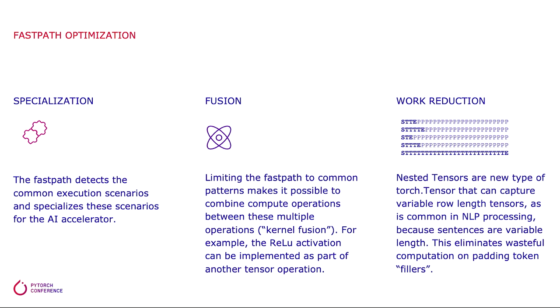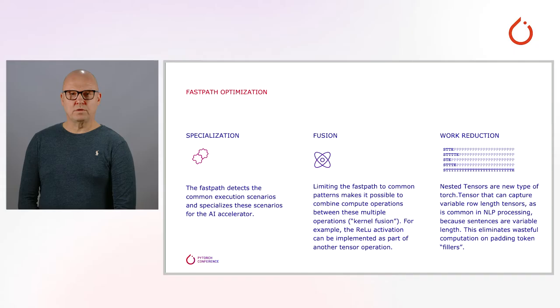The first optimization we perform for the Fast Path implementation is specialization. We recognize the most common execution scenarios — for example, batched inputs with the first dimension being the batch dimension, or the use of a common activation function like ReLU or GELU. This knowledge enables Fast Path developers to write better performing, more specialized code that may execute more efficiently, especially on accelerators.